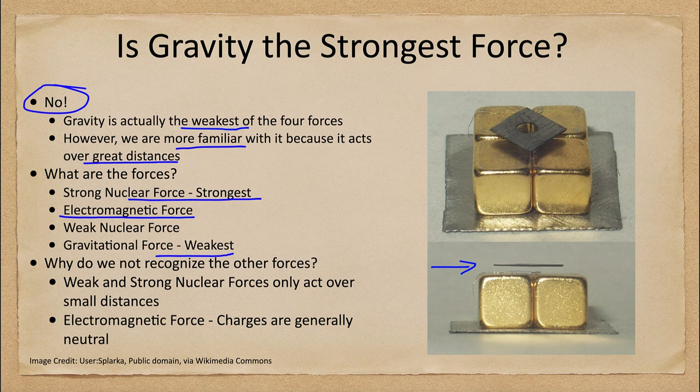That means the gravitational force is weaker — this small magnet pushing up is much stronger than the entire force of the Earth pulling down on that small object.